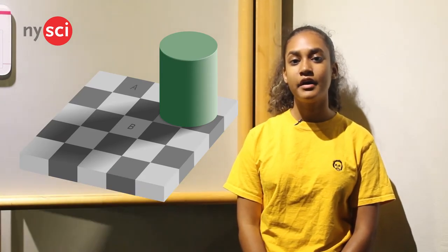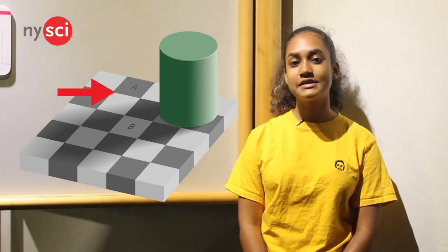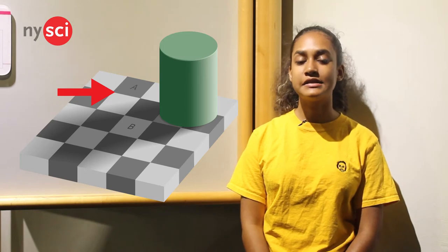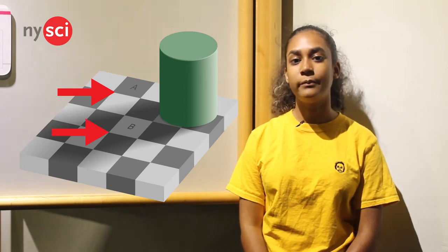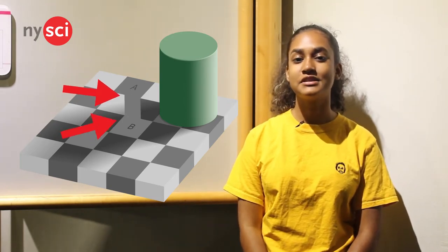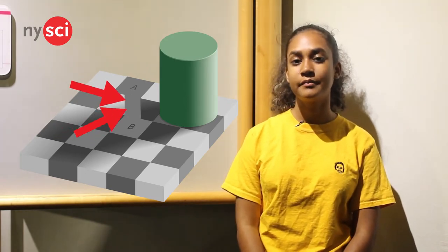Take a look at this image and ask yourself: which of tiles A or B appear brighter than the other? At first glance, tile A might look drastically darker than tile B, but they're actually the same shade of gray.